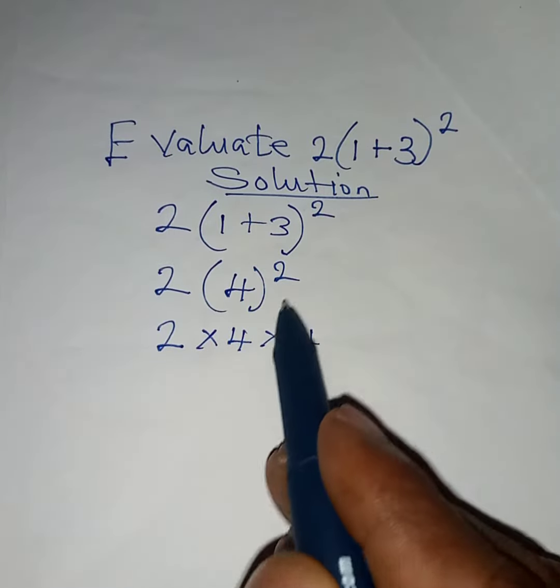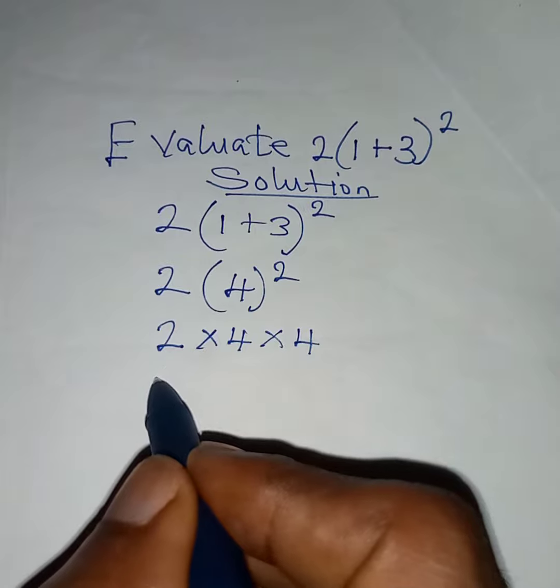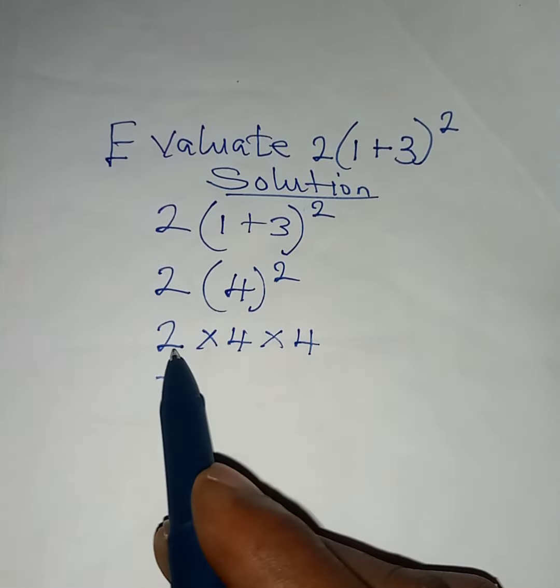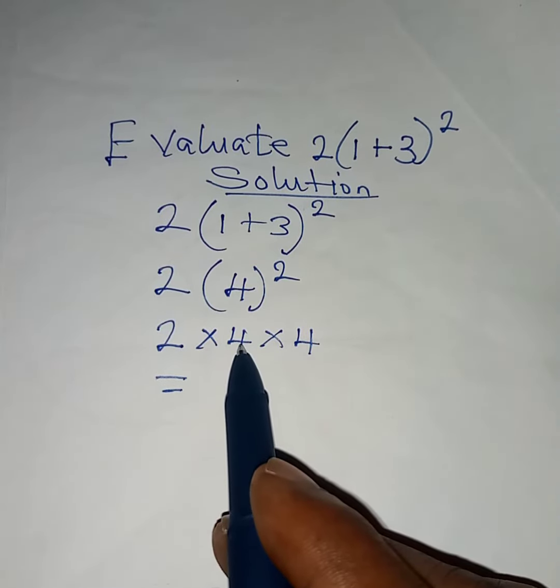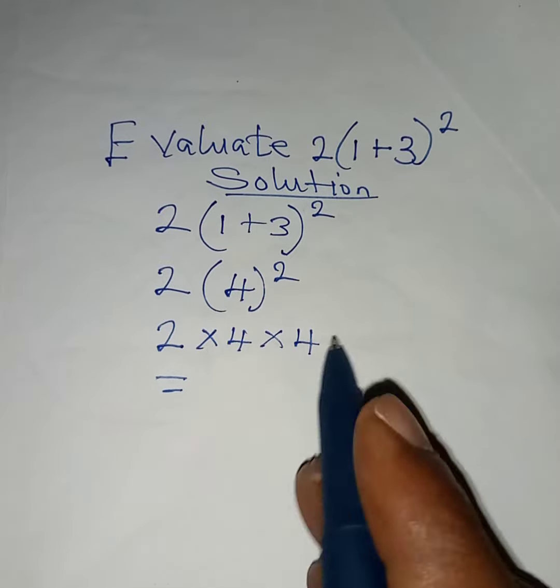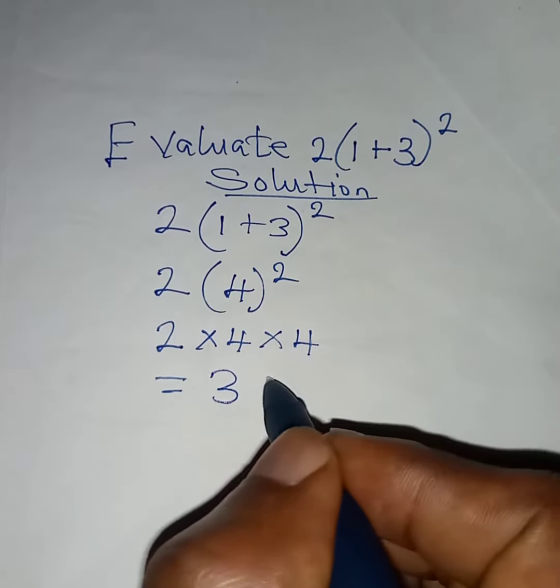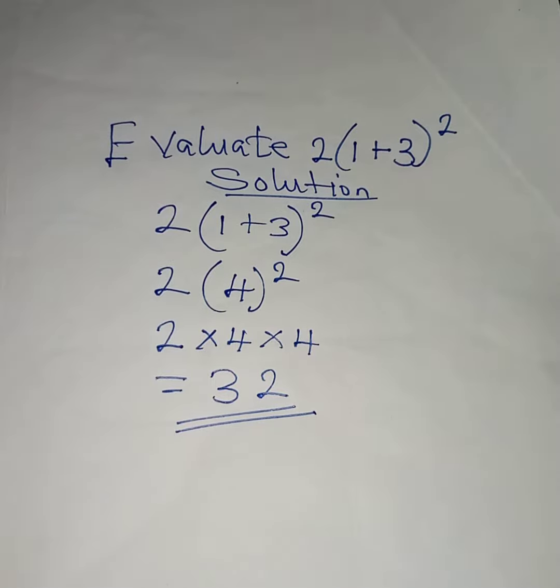Because four squared is four times four, and from here we have two times four, that is eight, times four equals 32. So 32 is the answer.